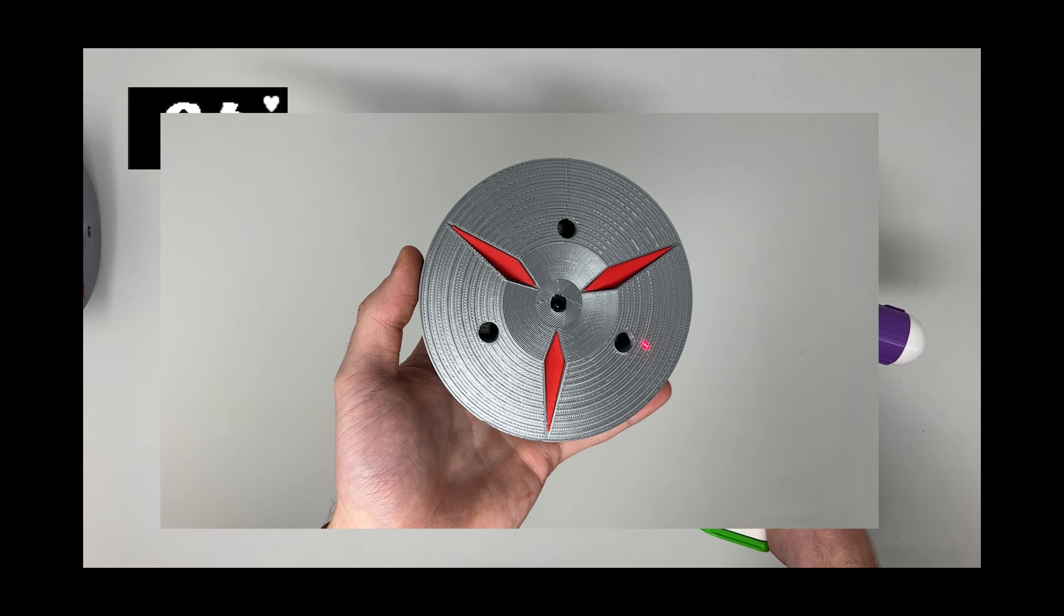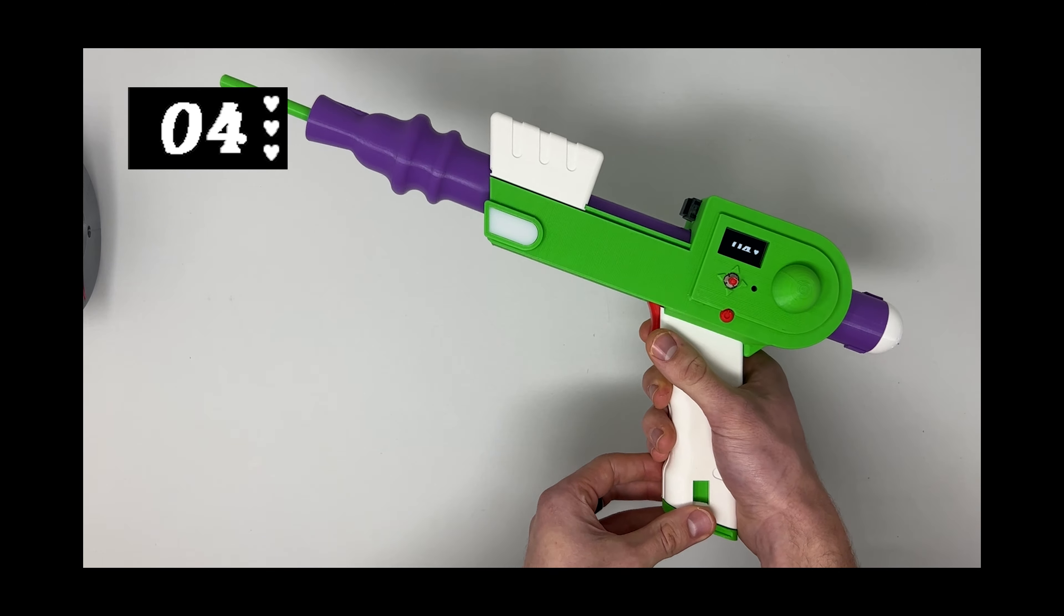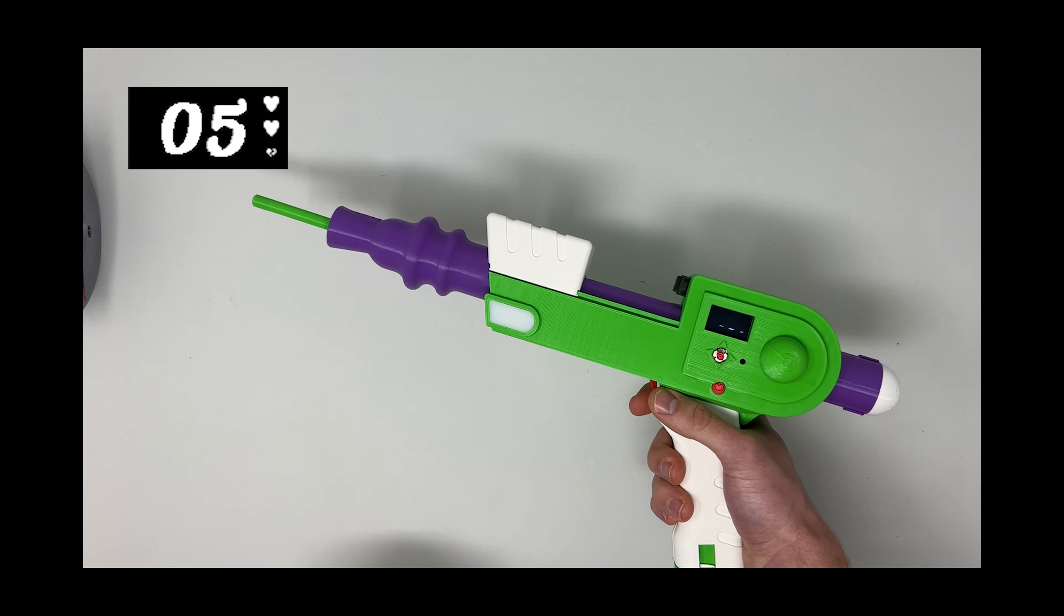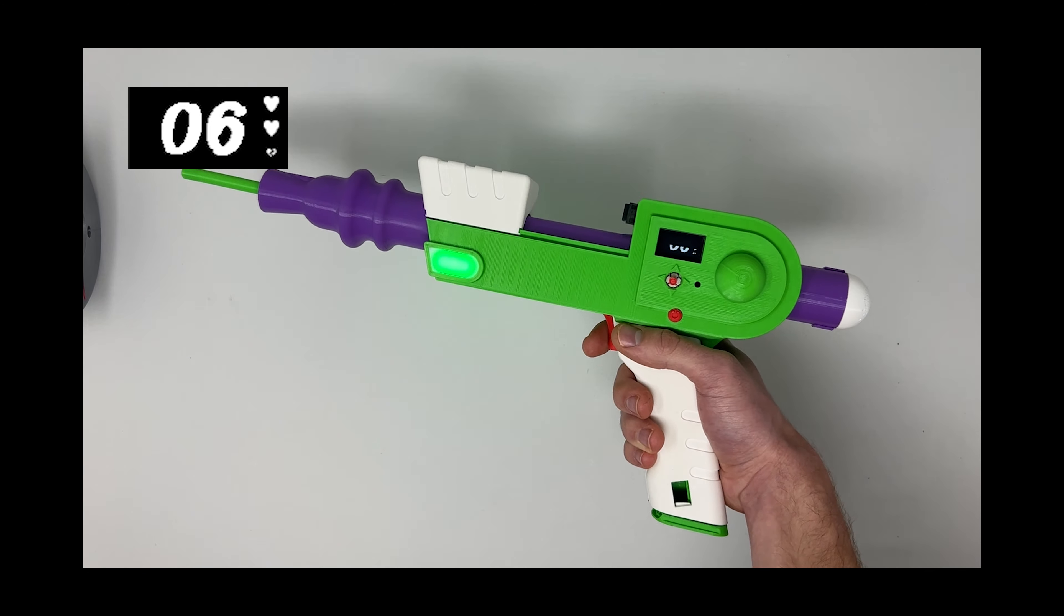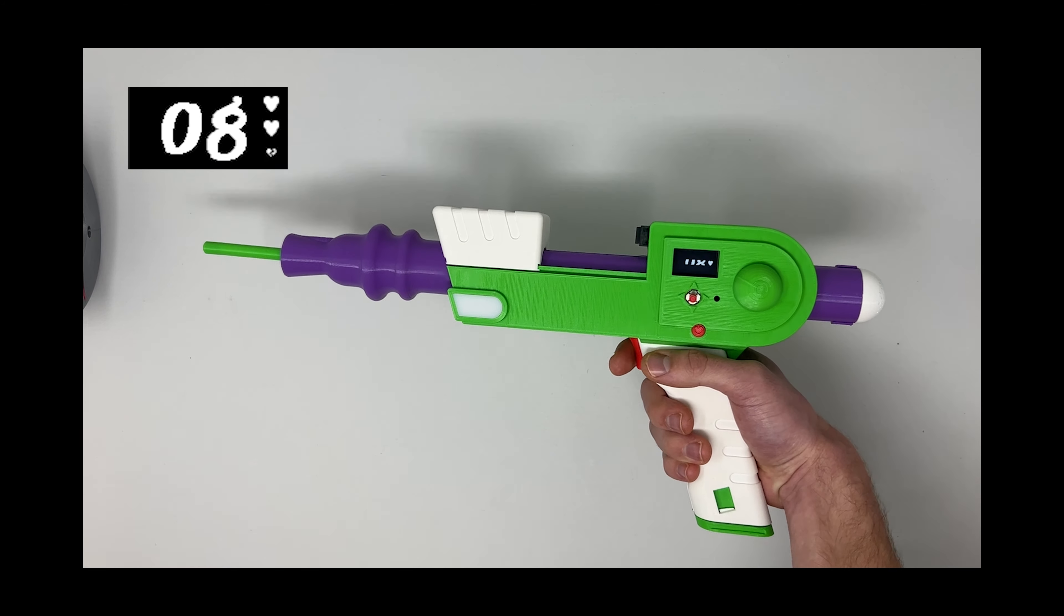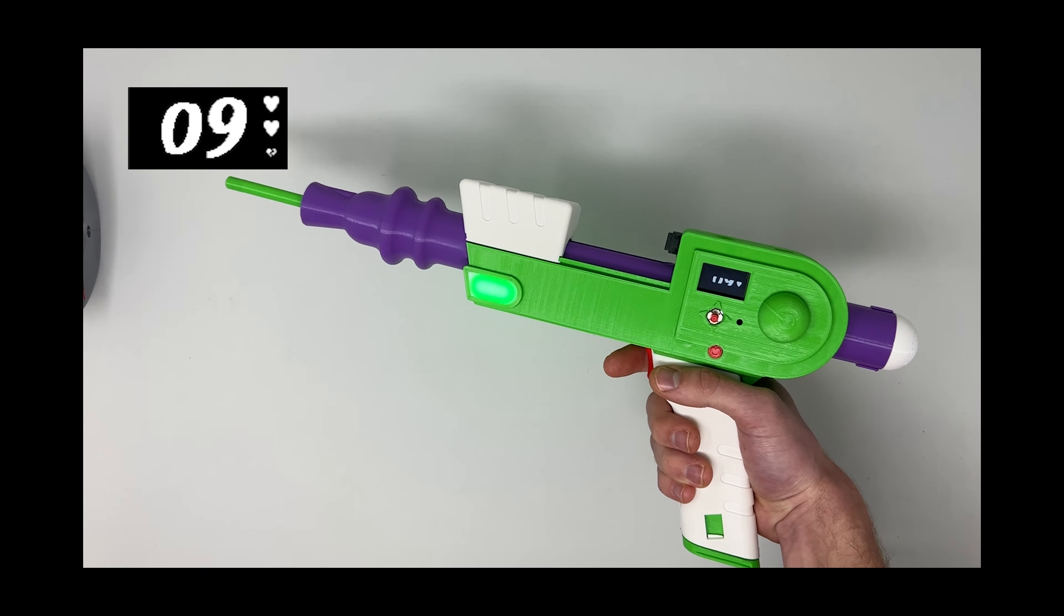A laser pointer on the blaster will indicate where your shot has landed. These tasks will keep repeating in a random order, with the time to complete each one decreasing as you progress.